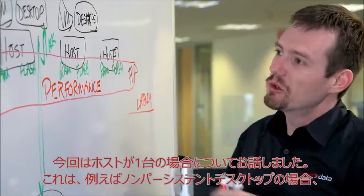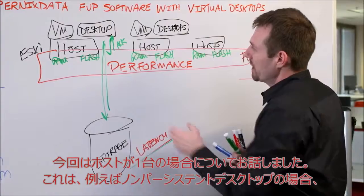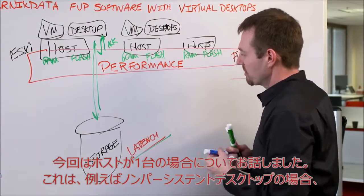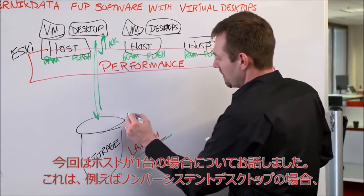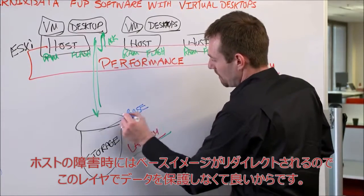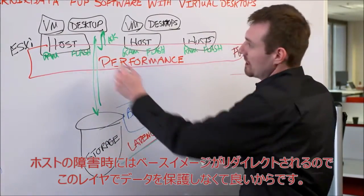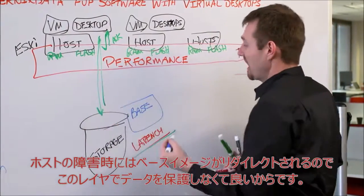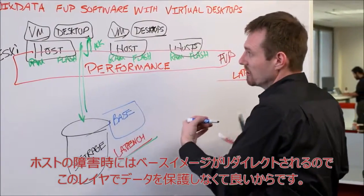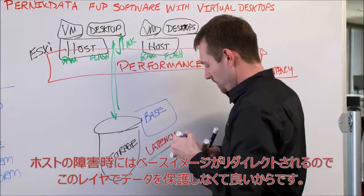I drew up the case of an immediate acknowledgement from just one host because for things like non-persistent desktops where we have a base image, if we were to lose that host, we'll redirect to another host — so we don't have to protect the data at this layer.